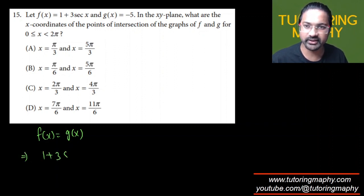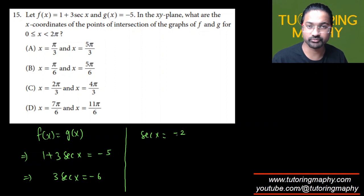The function is 1 plus 3 sec x and g(x) is nothing but negative 5. I'm going to subtract 1 from both sides. It's going to look like 3 sec of x is negative 6. I'm going to divide both sides by 3. So sec of x is negative 2 because 3 times 2 is 6.